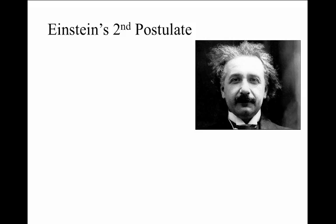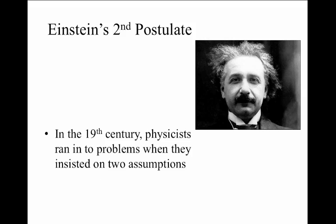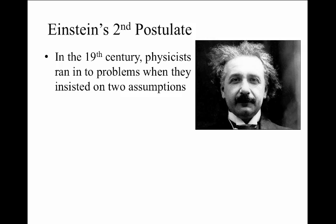Einstein's second postulate, similarly to the first postulate, throws out some of our 19th century views about how to formulate laws of physics. If you remember, in the 19th century, physicists ran into problems when they insisted on two assumptions, the first being an absolute rest frame, known as the ether, and in this formulation all velocities could be measured with respect to this absolute rest.